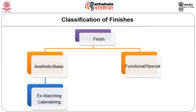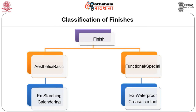Functional finishes, on the other hand, improve the performance properties of fabric as per the end use of the product. For example, waterproof finish makes the fabric water repellent for making umbrellas or tarpaulins; crease resistant finish makes cotton or wool fabric wrinkle resistant; and fireproof finish prevents the burning of fabrics.